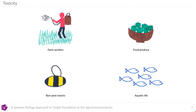Agrochemicals have to be lethal to the target organism, preferably at a very low dose, but they also have to be safe. They are subject to stringent regulation — they need to be safe for farm workers, consumers of food produce, and also for the environment, including non-pest insects and aquatic life. This presents a challenge for target deconvolution: we need to understand the target in the pest but also the fate of the compound in mammals and other organisms.